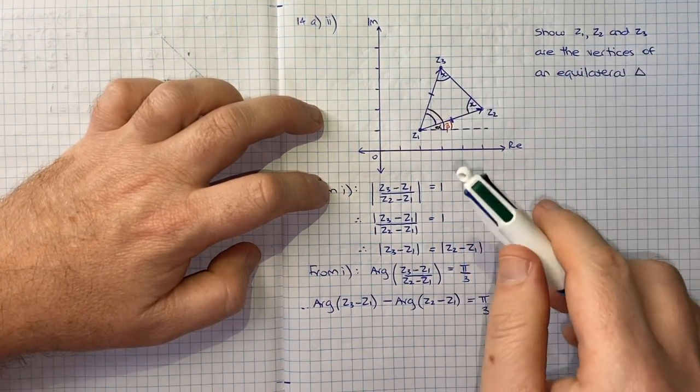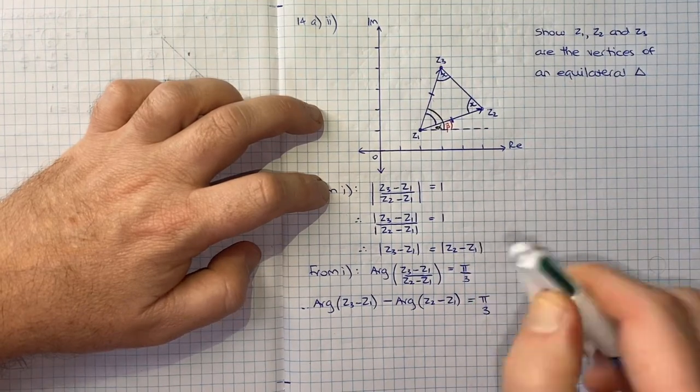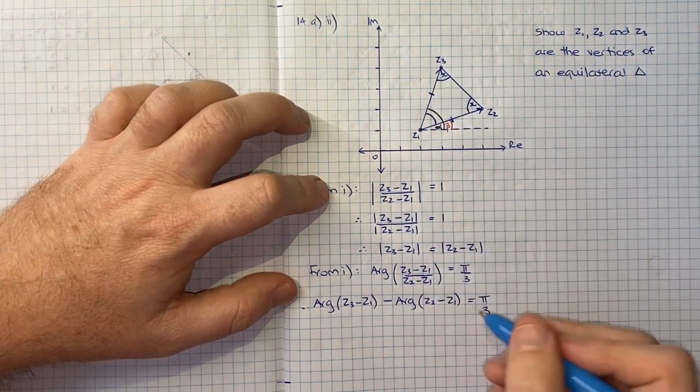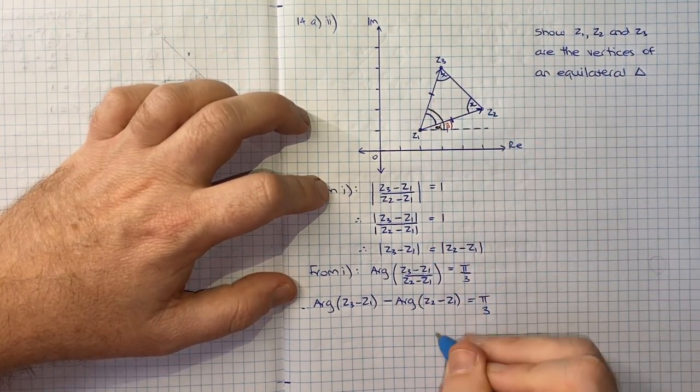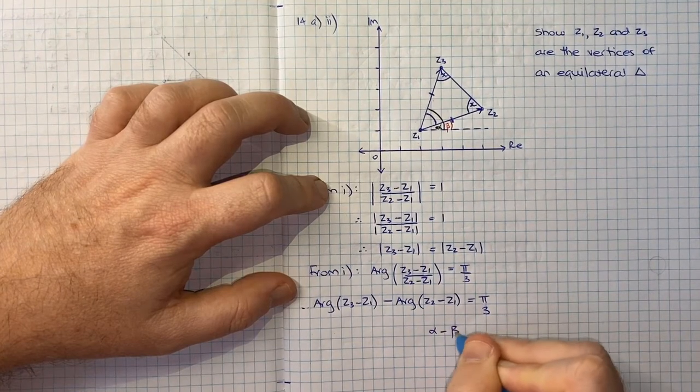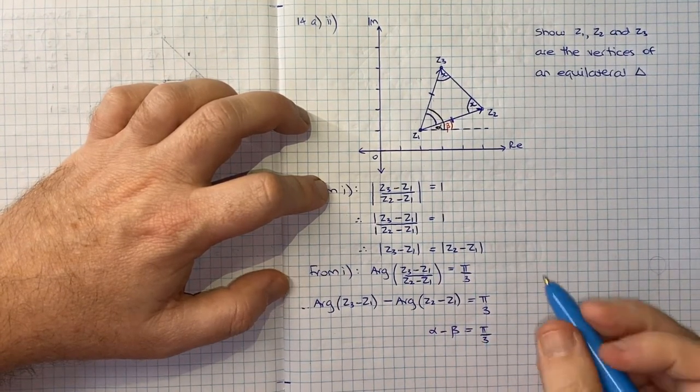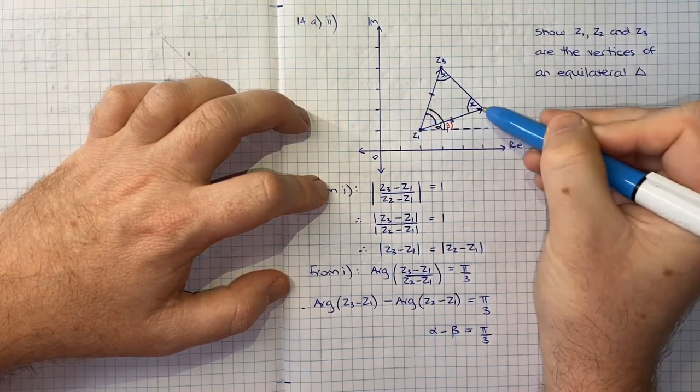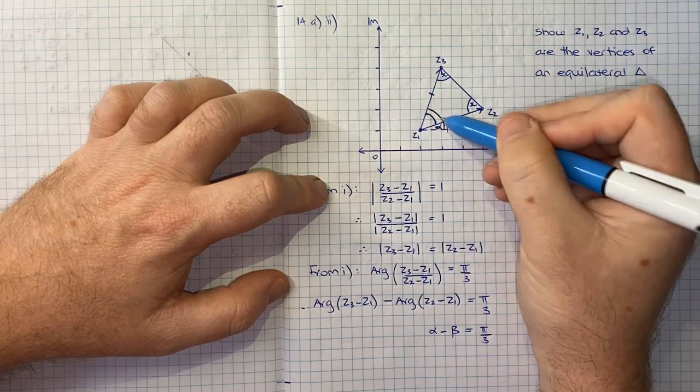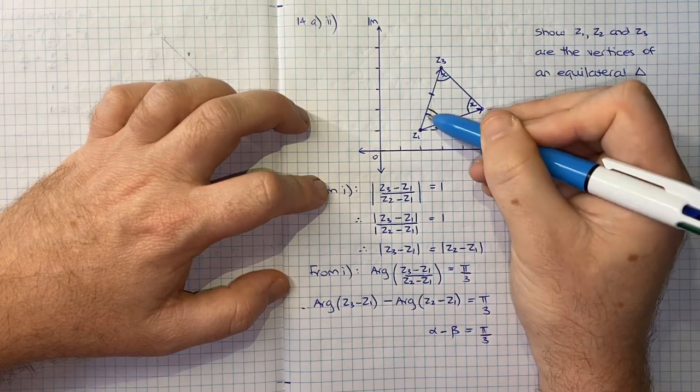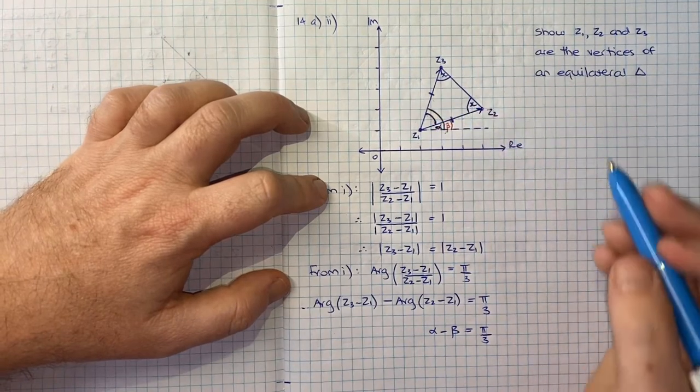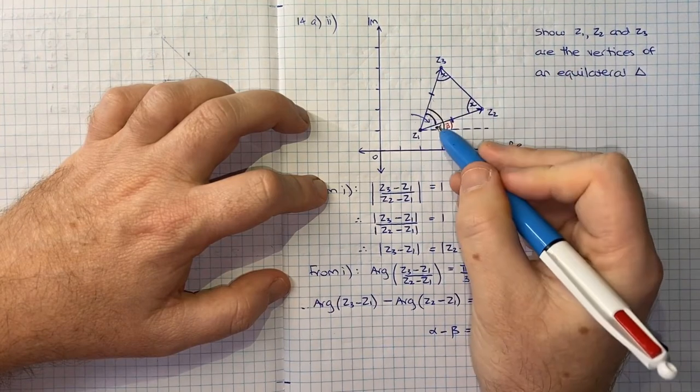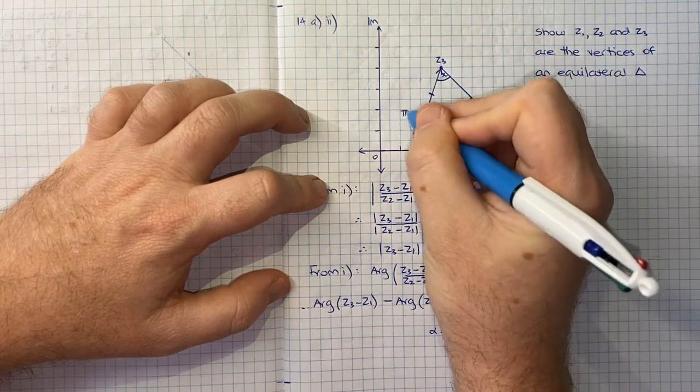And so we had this whole angle here was alpha, and this angle here was beta. And so in essence, what we're saying is alpha, the argument of this line here, minus beta, the argument of this line, alpha minus beta is equal to π on 3. But notice that this angle that we care about, this angle from here to here to here, from Z3 to Z1 to Z2, that is alpha minus beta. That is the angle we care about. So we can say that this angle here, being alpha minus beta, is π on 3.